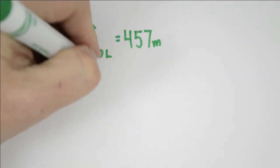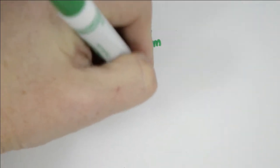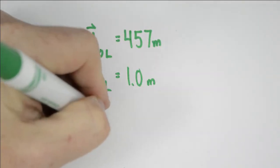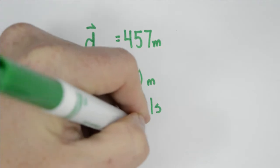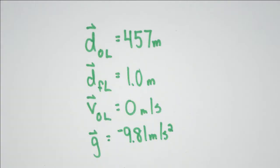And so what we have is her initial position is 457 meters. Her final position is 1 meter. Her initial velocity is going to be 0 meters per second, and she's going to fall under the influence of gravity, negative 9.81 meters per second squared.